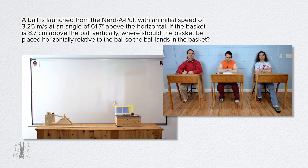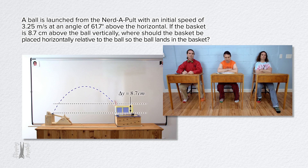A ball is launched from the Nerdapult with an initial speed of 3.25 meters per second at an angle of 61.7 degrees above the horizontal. If the basket is 8.7 centimeters above the ball vertically, where should the basket be placed horizontally relative to the ball so the ball lands in the basket?